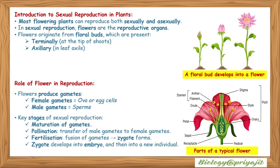Most flowering plants can reproduce both sexually and asexually. In sexual reproduction, flowers are the reproductive organs. They originate from floral buds which are present either terminally at the tip of the shoot or in the axils. Flowers produce gametes — female gametes are ova or egg cells, and male gametes are sperms.